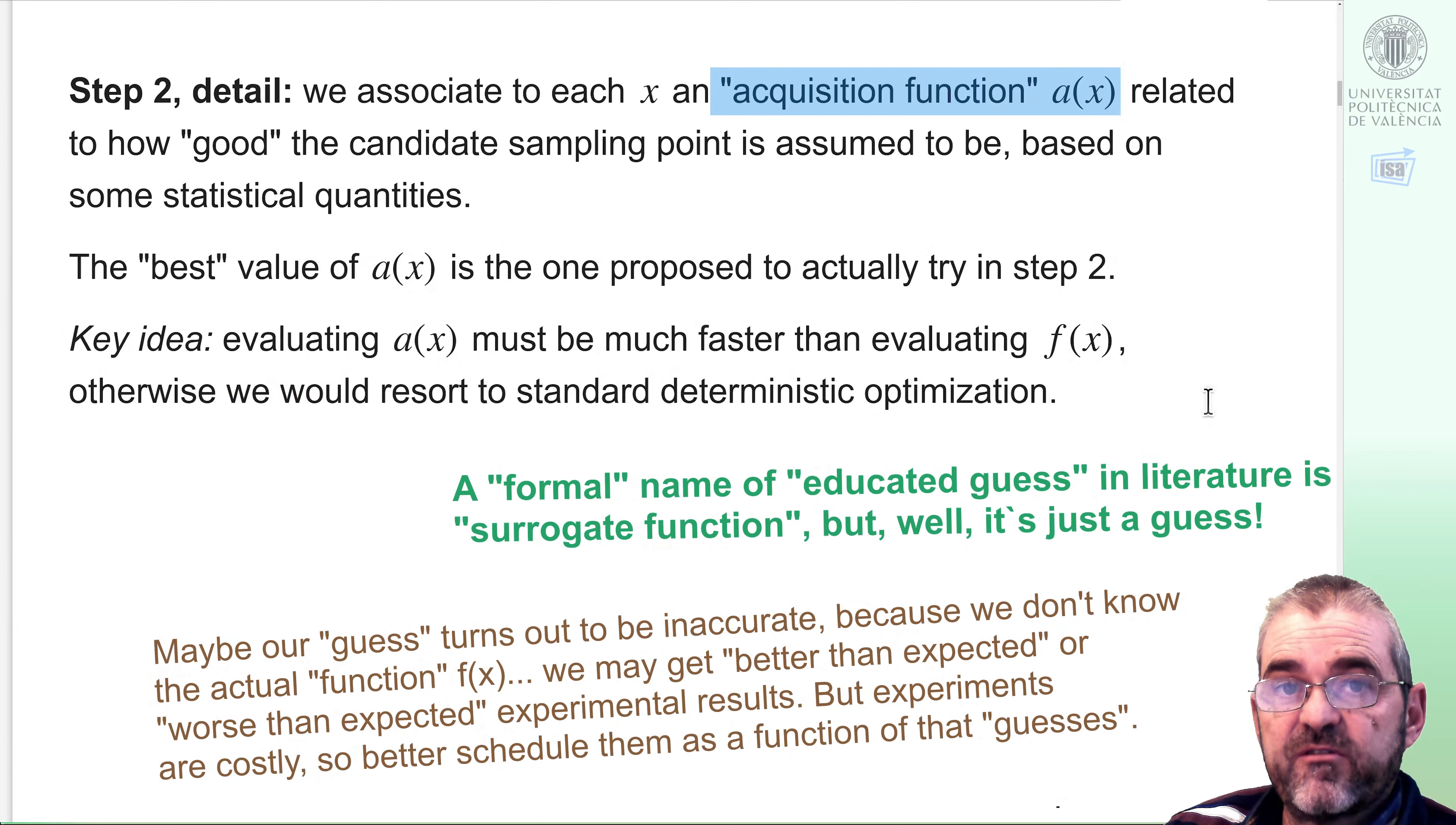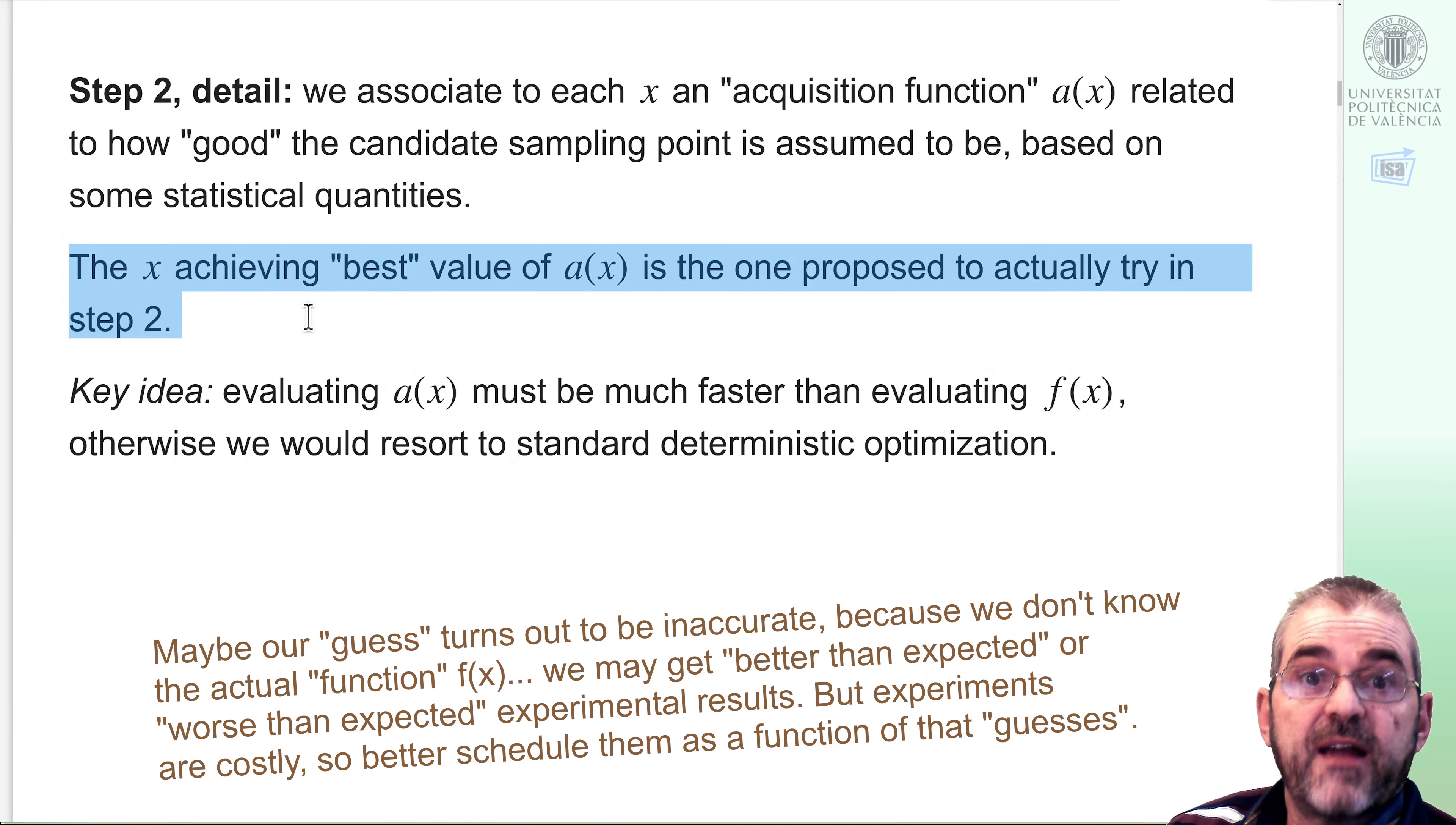If f of x is determining the efficacy of a given treatment on a patient, evaluating f of x takes two weeks, but evaluating a of x to decide the dose for next patient maybe takes some milliseconds in my computer. So a of x must be fast, must be based on some statistical concepts, and the x achieving the best value of the acquisition function will be the one we will try in that medical trial or in my drilling seeking for minerals.